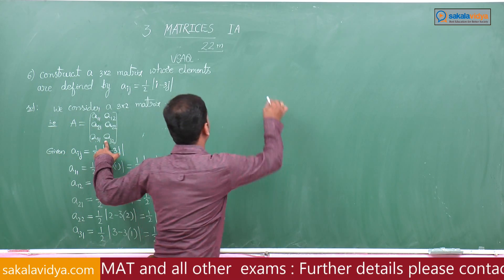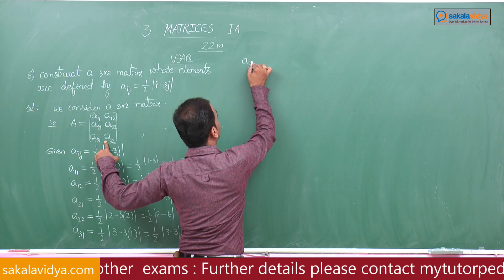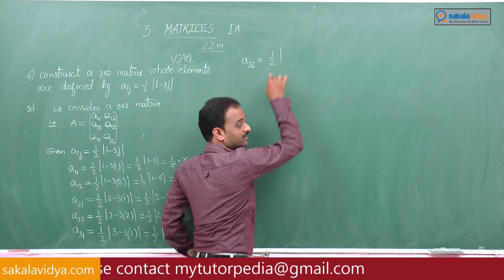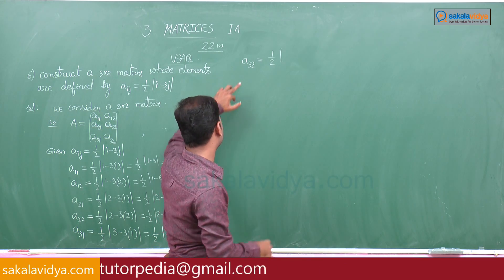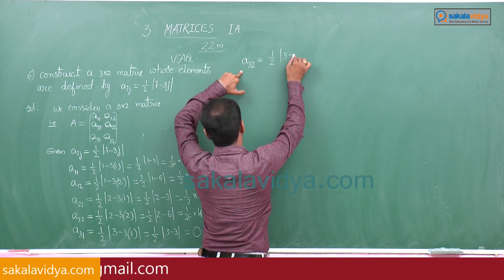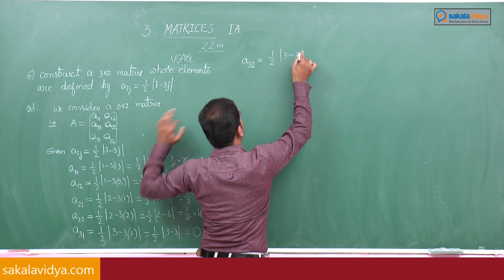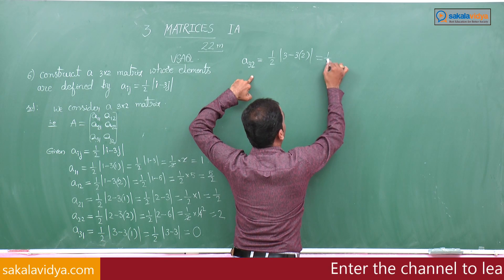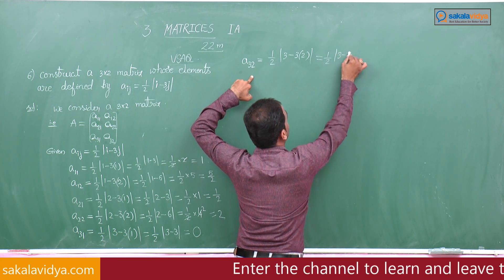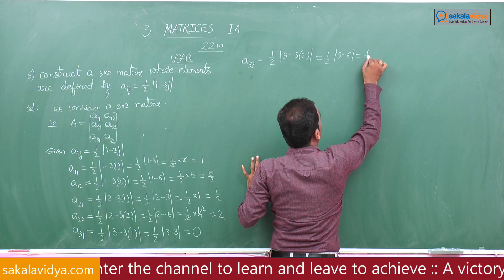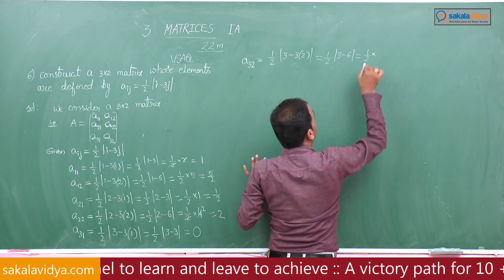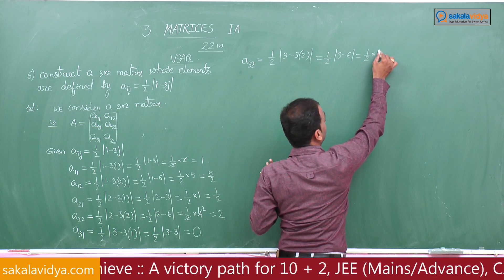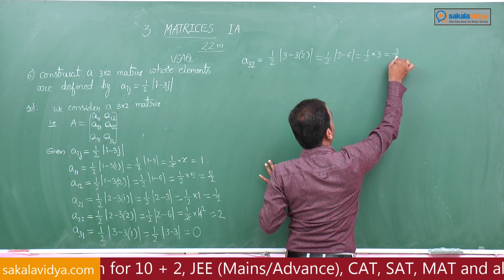Last element a32: third row, second column, so i equals 3 and j equals 2. We get 1 by 2 into mod of 3 minus 3 into 2, that is 1 by 2 into mod of 3 minus 6, which is modulus of minus 3 equals 3. So a32 equals 1 by 2 into 3, that is 3 by 2.